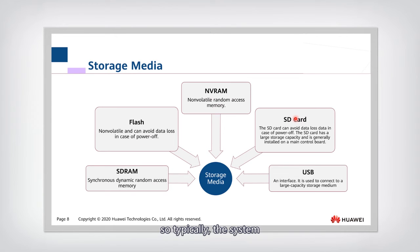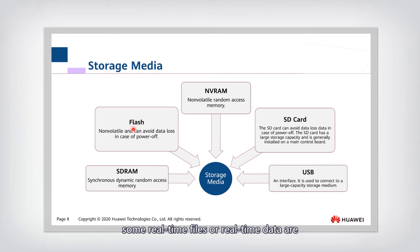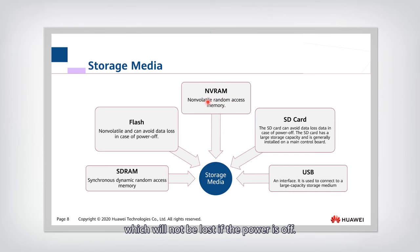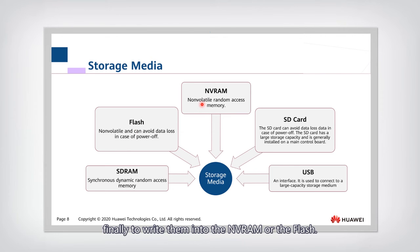Typically, system startup files are stored on the SD card or in flash. After system startup, real-time data is generated and written to SDRAM. Non-volatile RAM is used to write logs — because it is non-volatile, logs written to NVRAM will not be lost if the power is off. Writing logs directly to flash would be very time consuming, so logs are first written to a buffer, and when the buffer is full, they are finally written to NVRAM or flash.